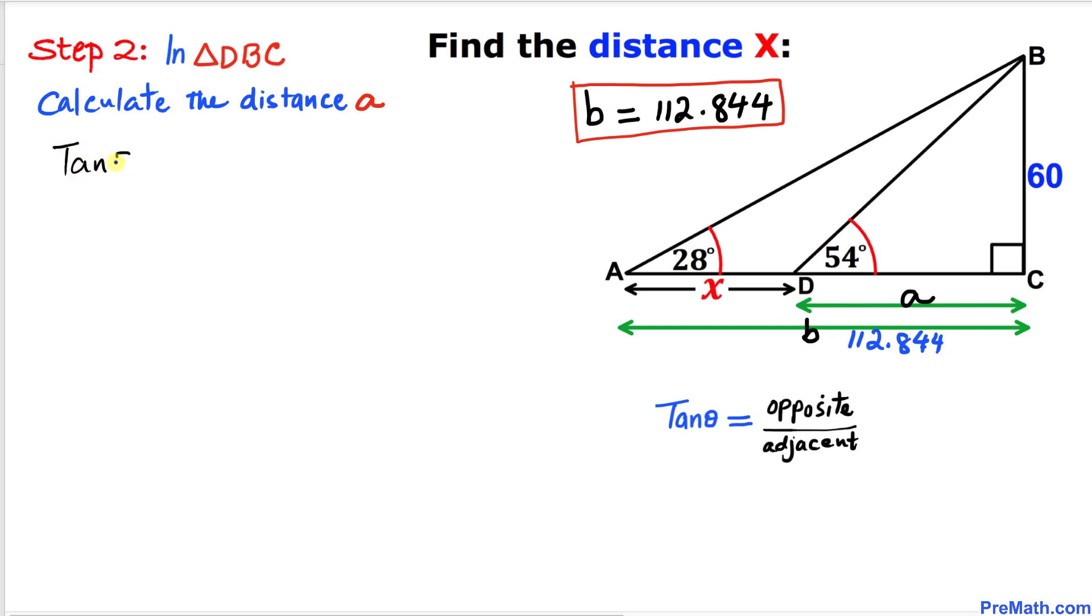Therefore, we are going to use once again this trigonometric ratio: tangent of 54 degrees equals... We're going to be using opposite over adjacent. In our case, the opposite side is 60 and our adjacent is simply a. Therefore, tangent of 54 degrees equals 60 divided by a.